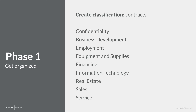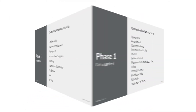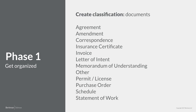The next classification scheme to consider relates to the documents themselves that you will manage. Remember, contracts and documents are not synonymous. Here is a list of document types to get you started: addendum, agreement, amendment, correspondence, insurance certificate, invoice, letter of intent, memorandum of understanding, other, permit or license, purchase order, schedule, statement of work, subcontract, and work order. This list might be too long or not appropriate for your situation — feel free to modify it. The list of document types should be grounded in your business practices and contracts.